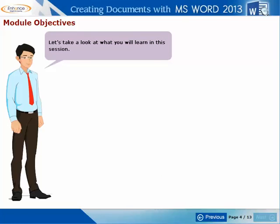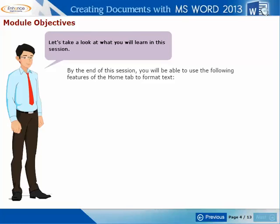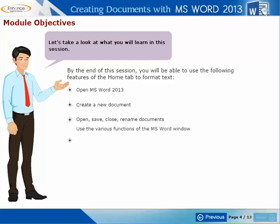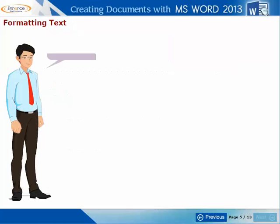Let's take a look at what you will learn in this session. By the end of this session, you will be able to use the following features of the Home tab to format text: open MS Word 2013, create a new document, open, save, close and rename documents, use the various functions of the MS Word window, and format text. So, let's get going and type out a letter.